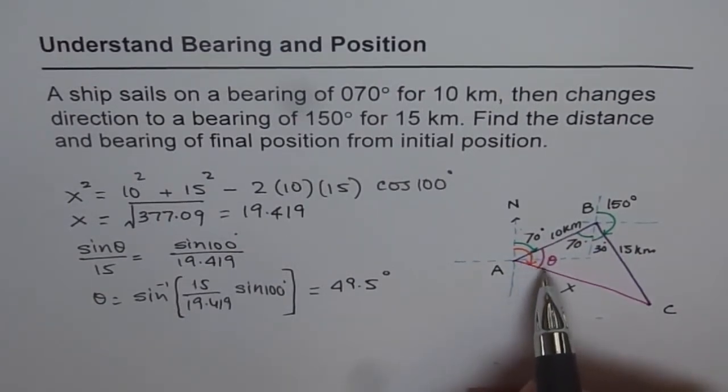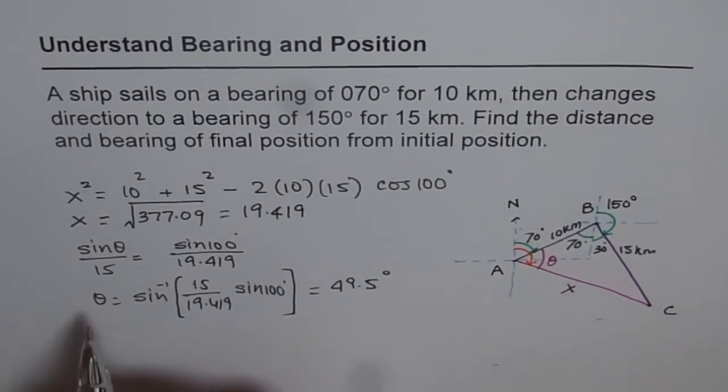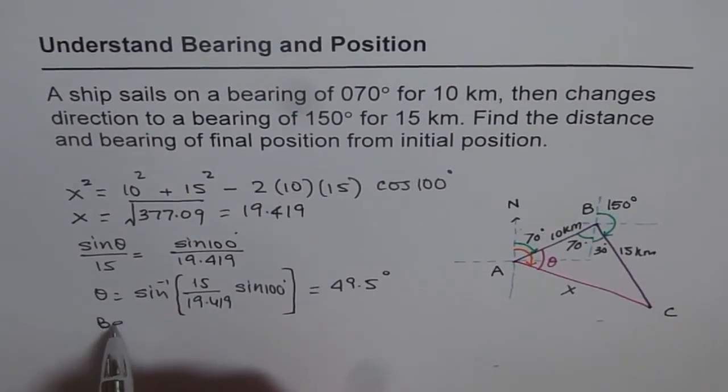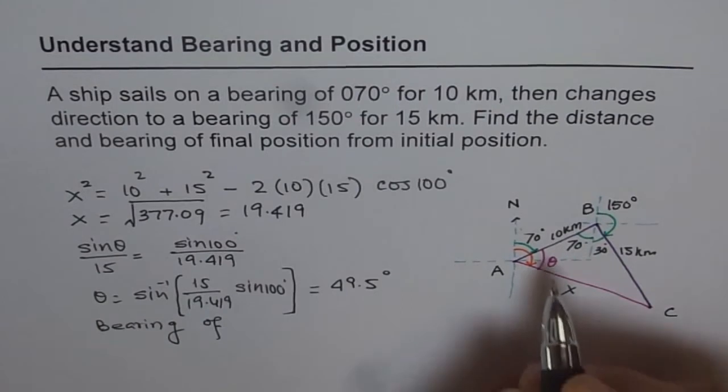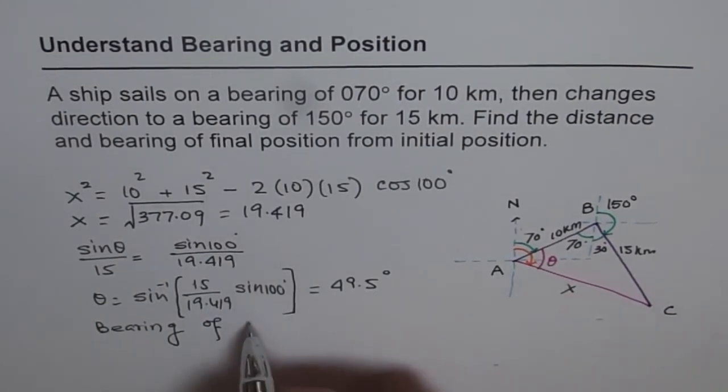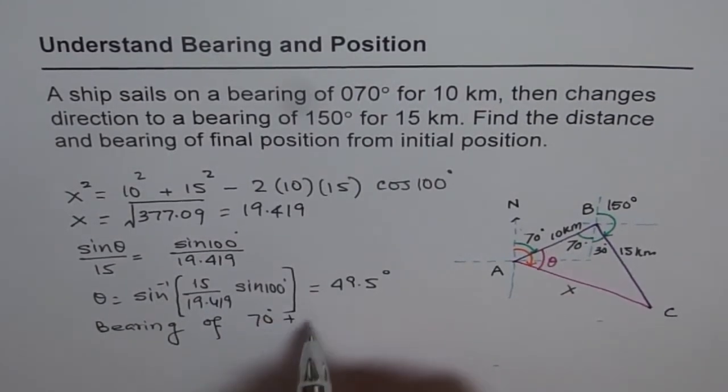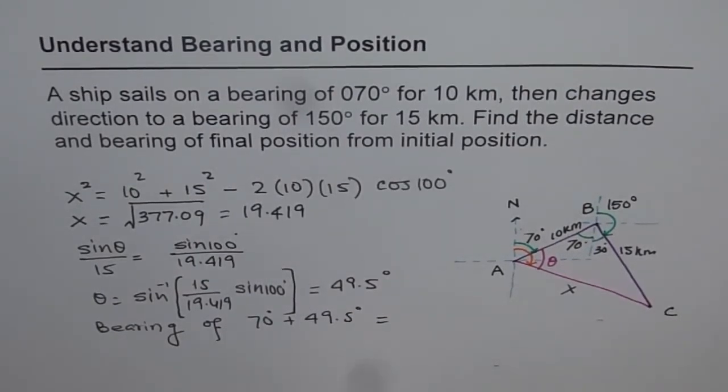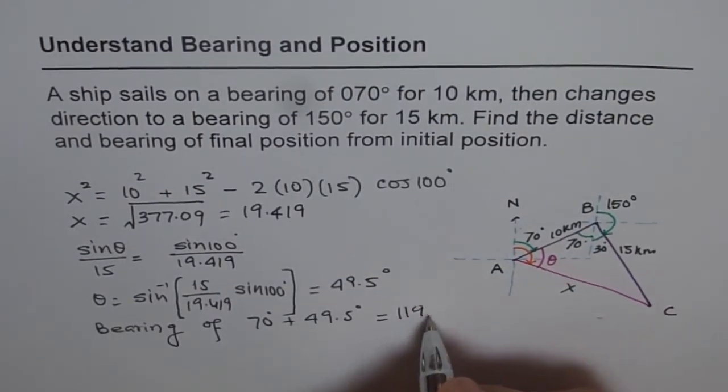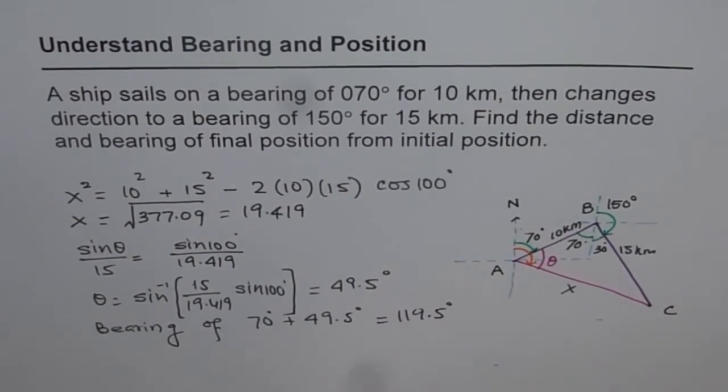Now we know theta, so what is the bearing? Bearing from north, if you see, is 70 plus 49.5. So we will say bearing of 70 plus theta. We have 70 degrees plus 49.5 degrees, which equals, so let me add this up, 119.5. So that is our answer.